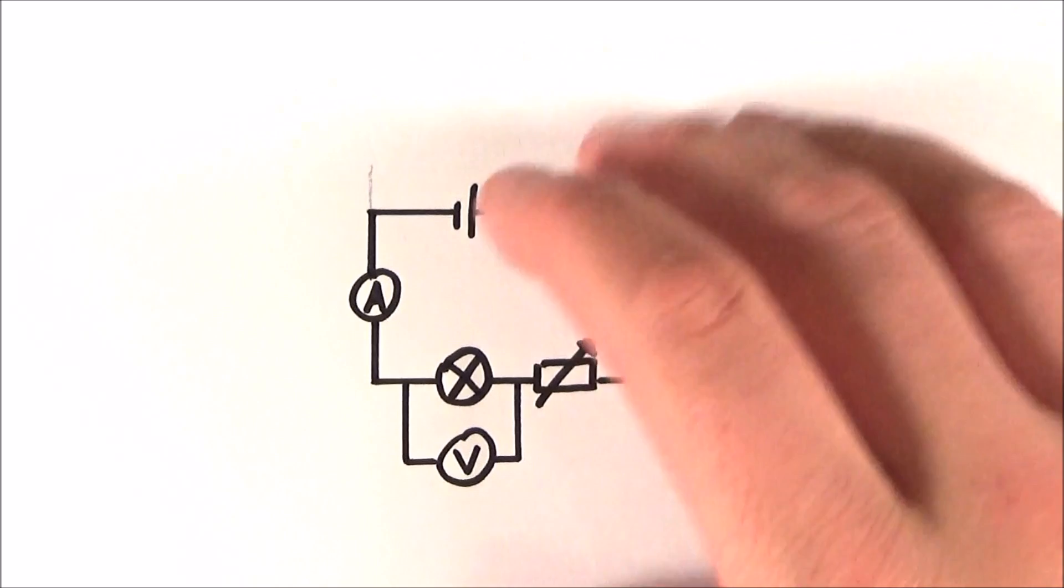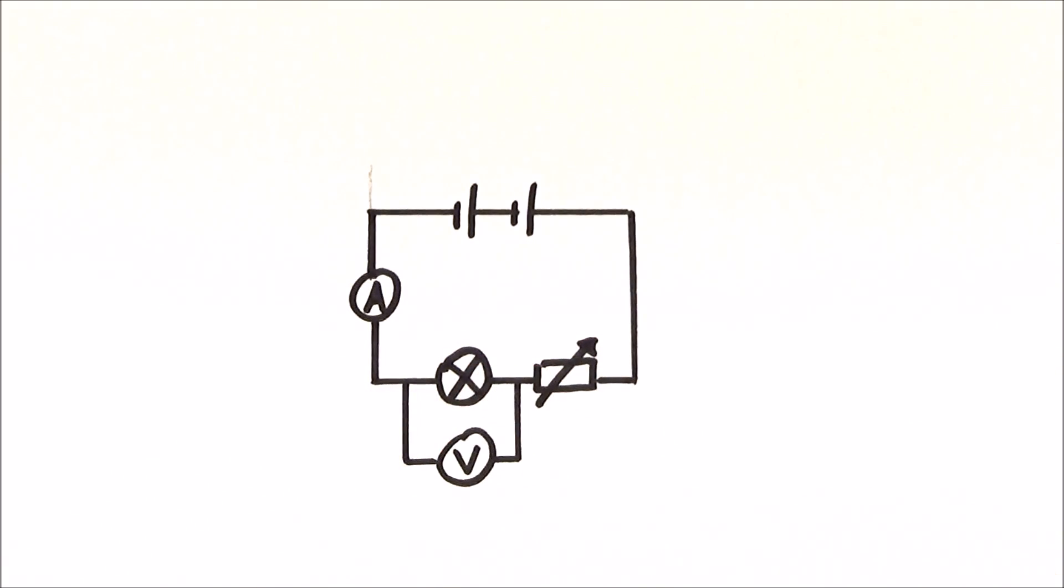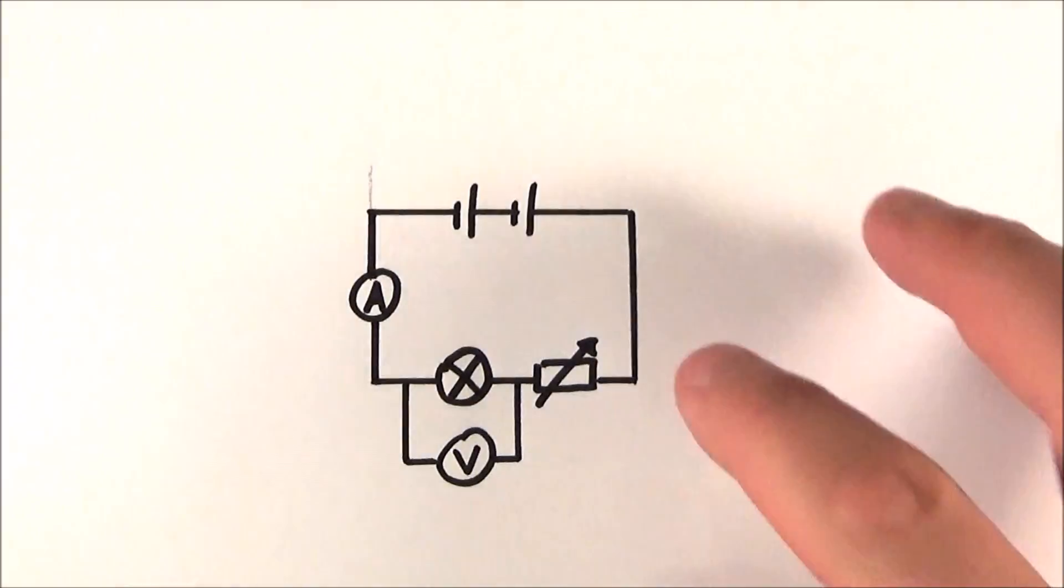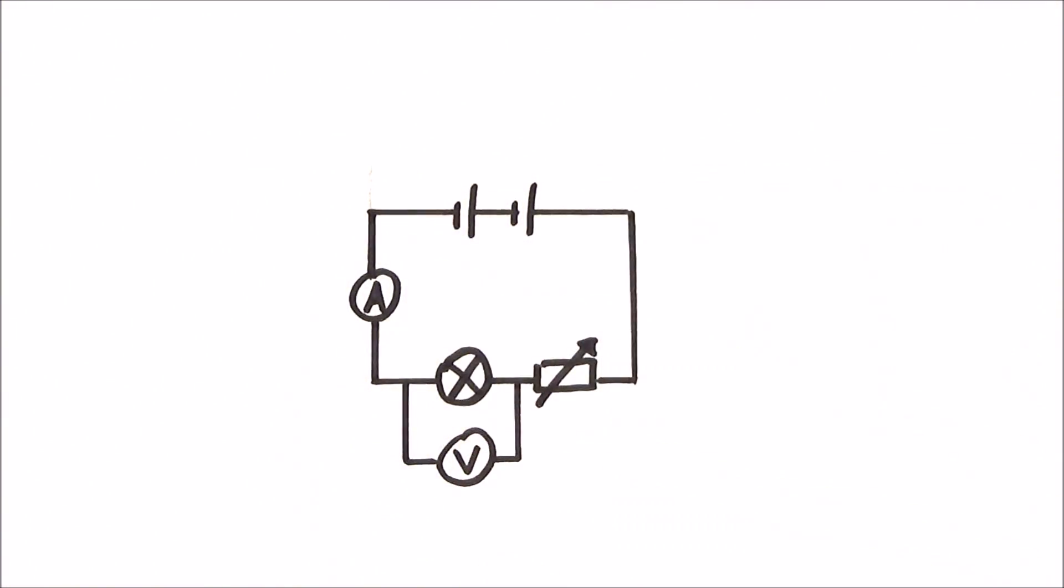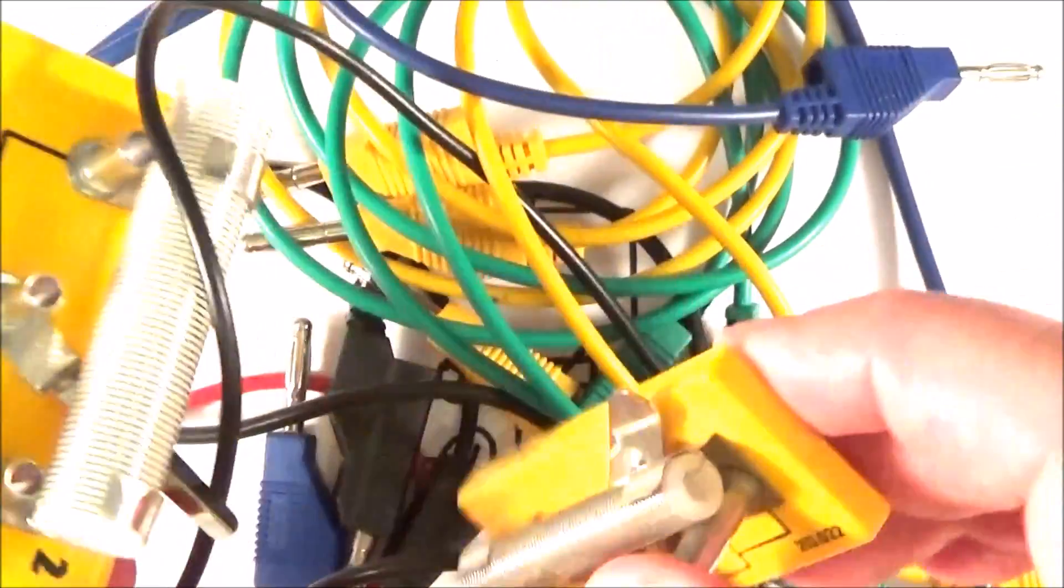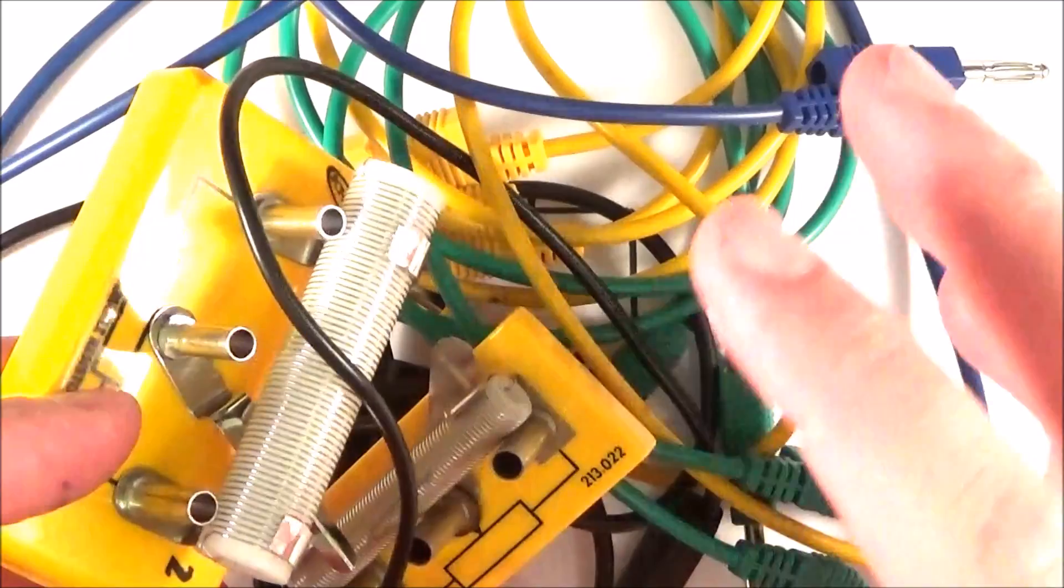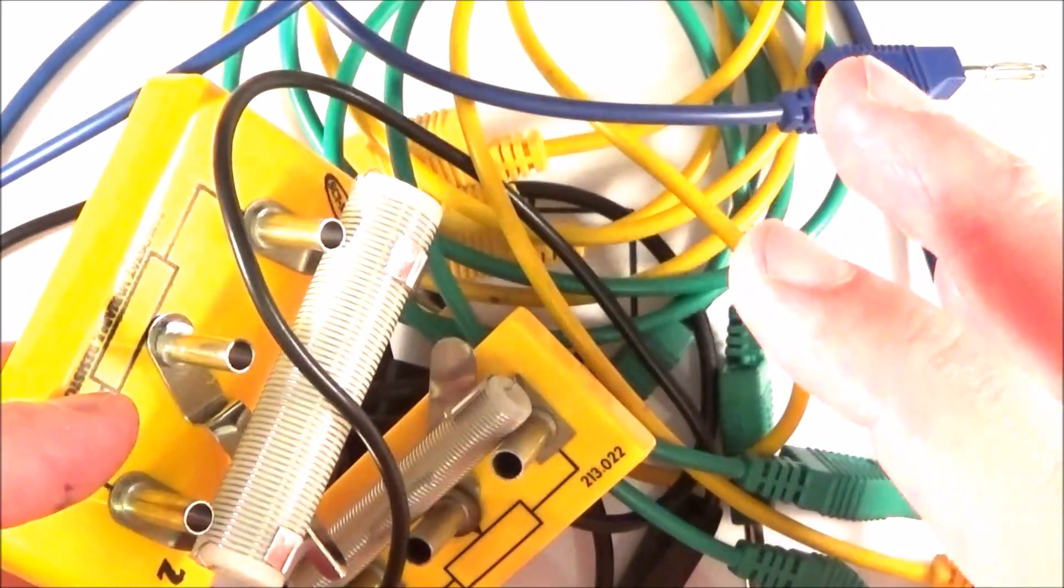This is the kind of thing we could use to investigate the IV characteristics of this component. But what I often see is that when it comes to actually setting up a very simple circuit like this, we get basically a jumble of wires and various components all connected up. And people do find it hard, no matter what you did at GCSE, to actually get these circuits working at A-level.